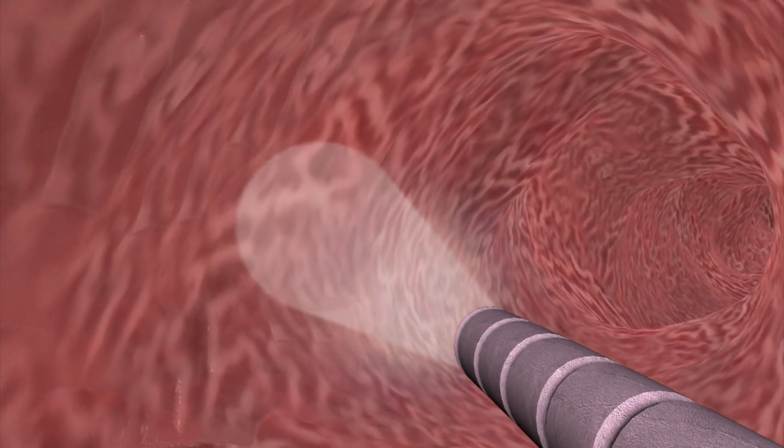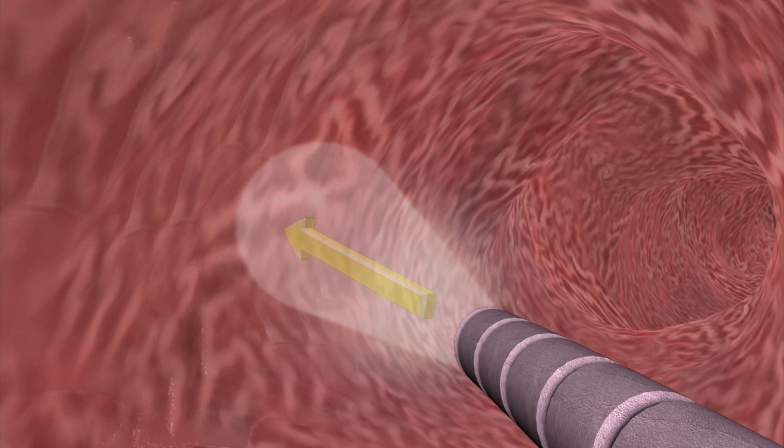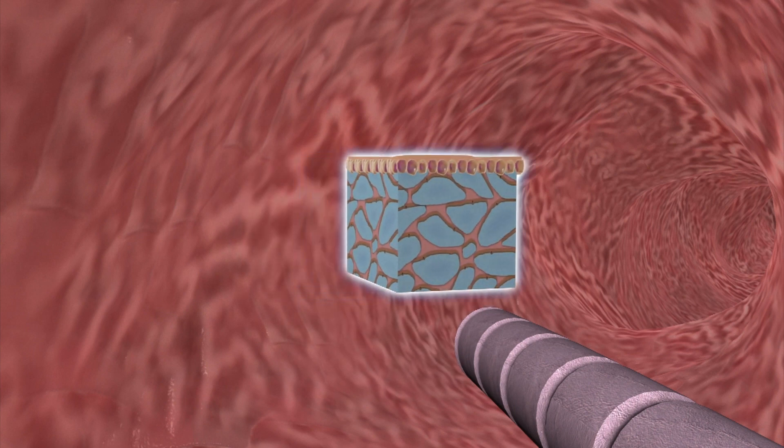Researchers discovered a new organ by accident while looking at a bile duct and noticed tears in dense tissue. They were using a laser imaging technique to measure internal tissue depth via reflected light.